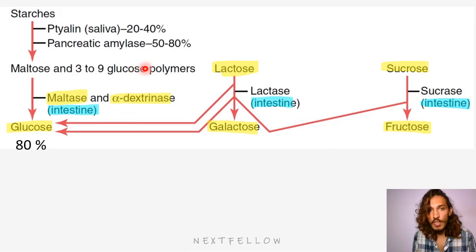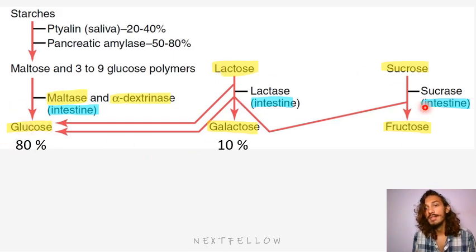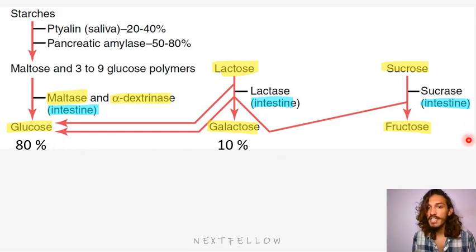When you take a look at the digestive products, ultimately 80% will be glucose — because maltose gives glucose, lactose also partly gives glucose, sucrose also gives glucose. So 80% will be glucose, 10% will be galactose, and 10% will be fructose.